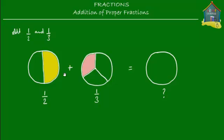To cut up these two pizzas into the same number of slices — or to change unlike fractions to like fractions — we must first find the least common multiple of two and three.